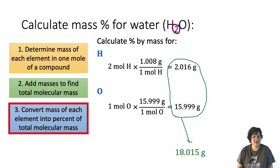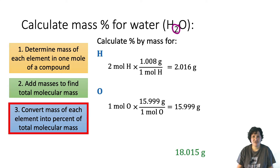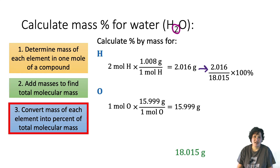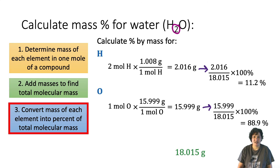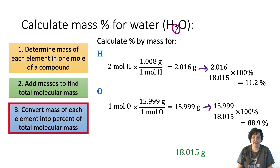Now we calculate the mass percent of each element using that molecular mass. Starting with hydrogen, we divide the mass of hydrogen — 2.016 grams — by the molar mass of 18.015 grams, and multiply by 100%. That tells us that 11.2% of the total mass of water is accounted for by hydrogen atoms. For oxygen, we divide 15.999 grams by 18.015 grams and multiply by 100%, and we find that 88.9% of the mass of water is made up of oxygen atoms.